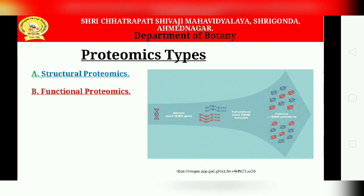There are two types of proteomics: structural proteomics and functional proteomics. Structural proteomics includes all the various products encoded by a single gene that may result from multiple transcripts, from the use of alternative translation start sites on mRNAs, and from different post-translational modifications of individual translation products.